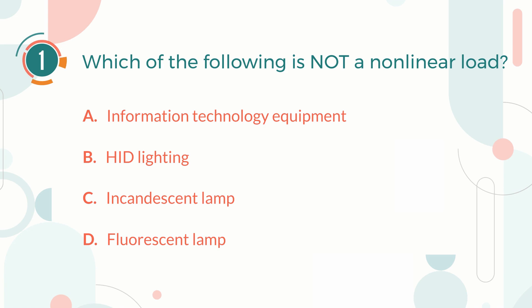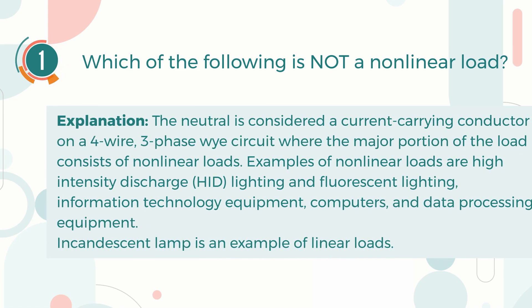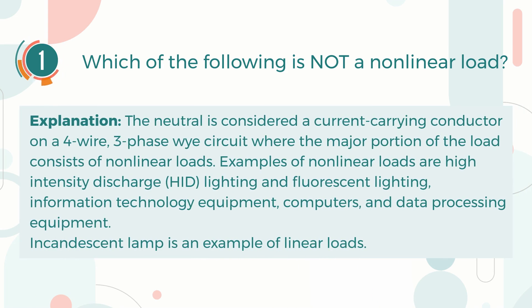The correct answer is C. Incandescent Lamp. Explanation: The neutral is considered a current-carrying conductor on a 4-wire, 3-phase Y-circuit, where the major portion of the load consists of non-linear loads.